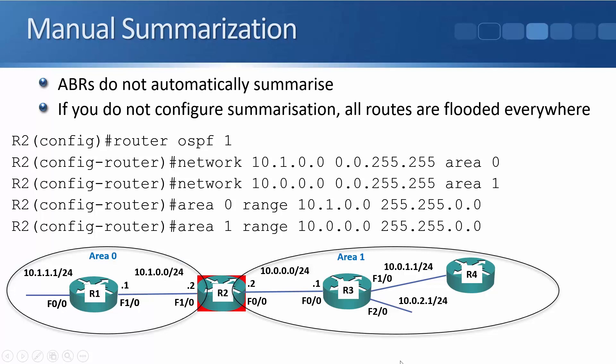On the right-hand side in area one, the routes are 10.0.0.0/24, 10.0.1.0/24, and 10.0.2.0/24. Rather than advertising all those individual /24 networks over to area zero, I summarize to a single /16 route using 'area 1 range 10.0.0.0 255.255.0.0'. The effect is that R1 in area zero, rather than having routes to 10.0.0.0/24, 10.0.1.0/24, and 10.0.2.0/24, just has a single summary route for 10.0.0.0/16 — so there are fewer routes on R1, taking up less memory.